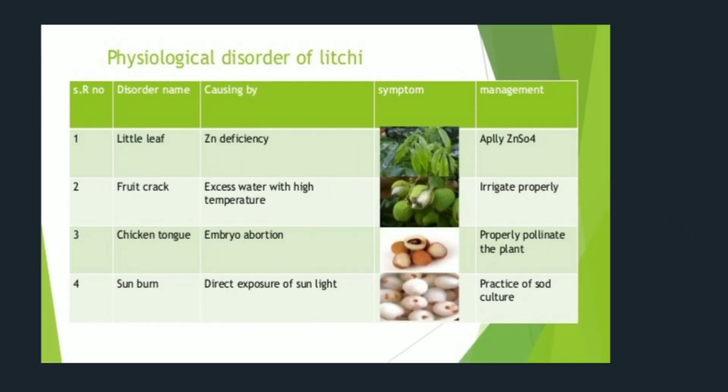Physiological disorders of lychee: First, little leaf — caused by zinc deficiency; management: apply ZnSO4. Second, fruit crack — caused by excess water with high temperature; management: irrigate properly. Third, chicken tongue — caused by embryo abortion; management: properly pollinate the plant. Fourth, sunburn — caused by direct exposure to sunlight; management: practice of salt culture.